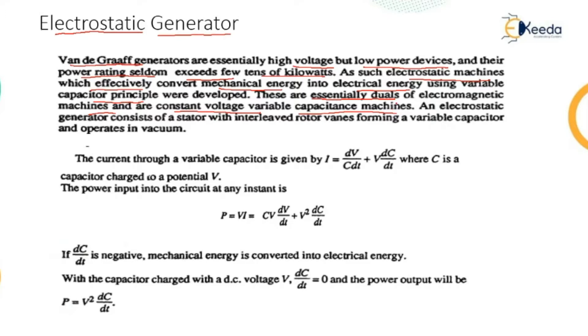An electrostatic generator consists of a stator with interleaved rotor vanes forming a variable capacitor and operates in vacuum. The current through a variable capacitor is given by i equals dV/dt times 1/C plus V times dC/dt.